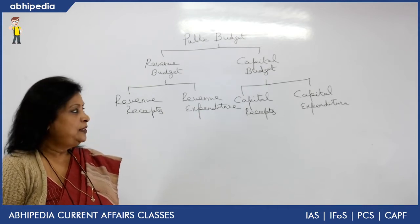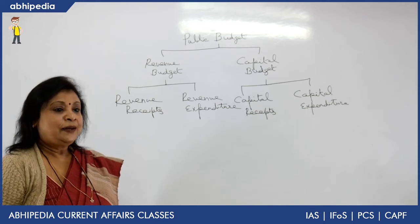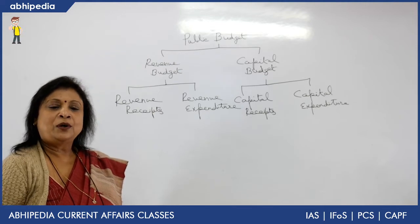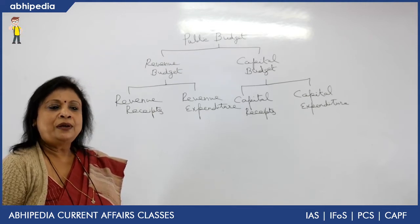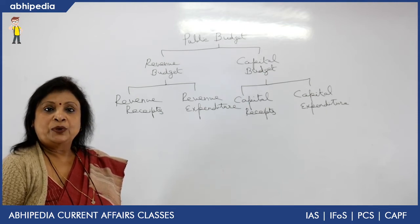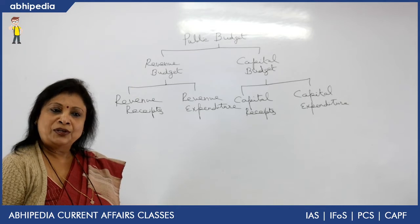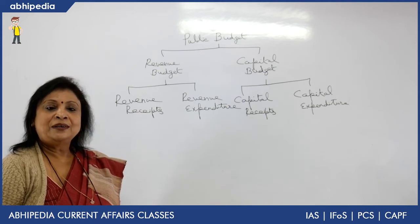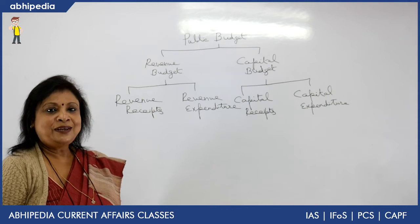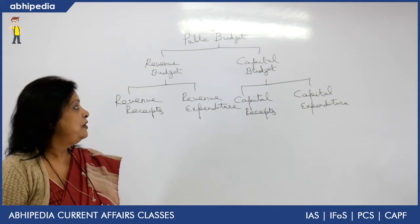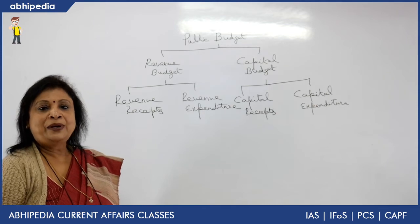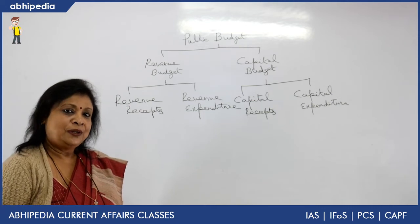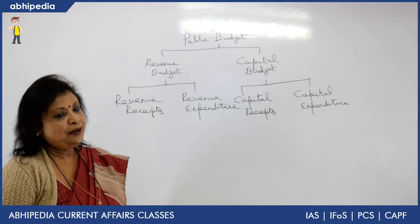Capital budget relates to borrowings. When I say creation of a capital asset, I mean an asset which is not only used in the current financial year, but is also used by future generations. For example, suppose there is an airport — it will not only be used in the present financial year but also by future generations. The government is the guardian of the future generation, and therefore it is mandatory to make a distinction between revenue and capital budget. Otherwise, there would be a tendency to spend all money in the current financial year, leaving nothing for the future.